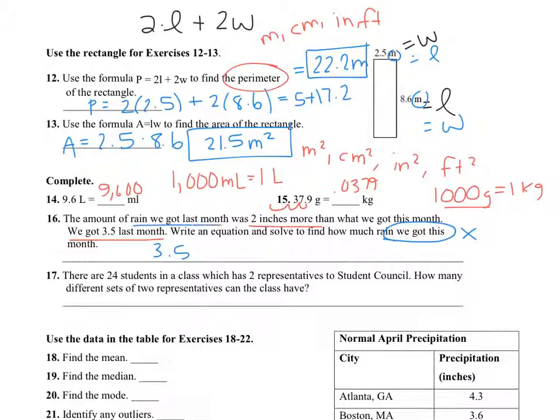So was is kind of like is, so put equals. 2 inches more means plus 2 the rain we got this month. That's x. So my equation is 3.5 equals x plus 2. So you subtract 2 from each side. So x equals 1.5 inches.